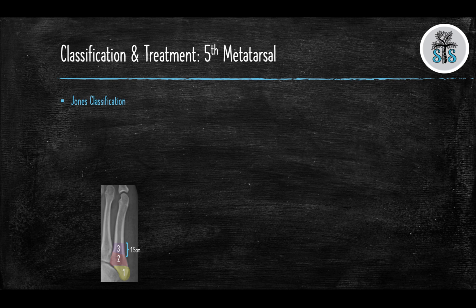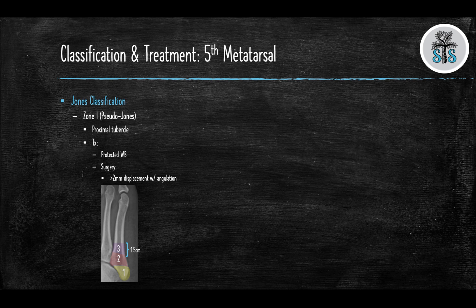The Jones classification is used to classify 5th metatarsal fractures. Zone 1, also known as the pseudo-Jones fracture, is the most common fracture, accounting for approximately 93% of 5th metatarsal fractures. It is defined as a fracture of the proximal tubercle. Most will be treated with protected weight bearing. Surgical treatment can be considered if the fracture is displaced greater than 2 mm with angulation.